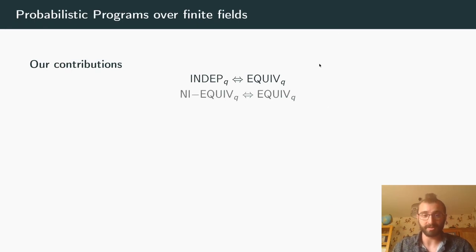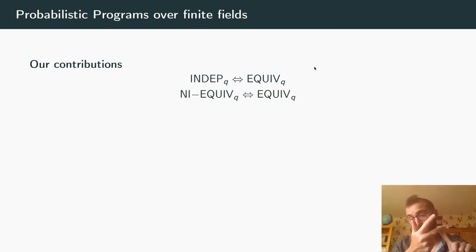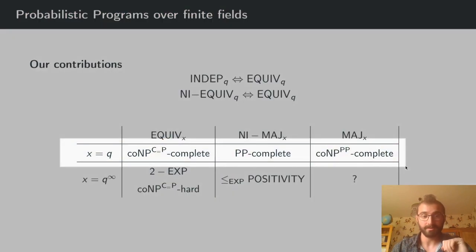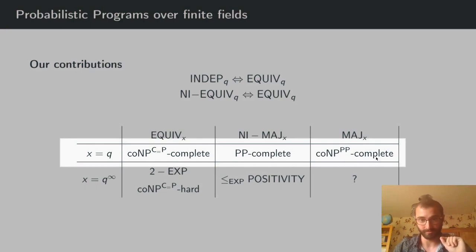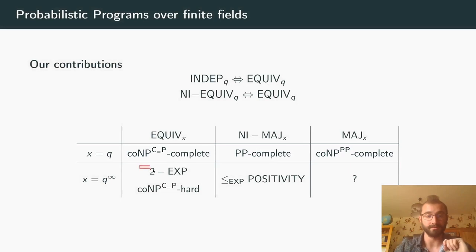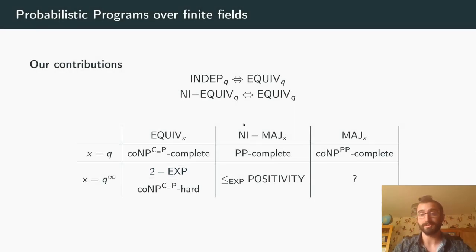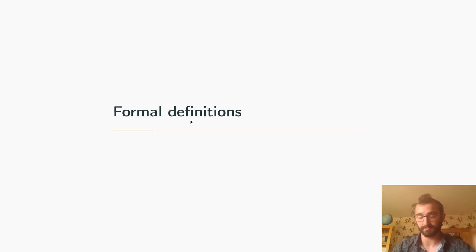In our paper, we start by showing some first reductions between the problems. Independence, equivalence, and equivalence with fixed inputs are all three inter-reducible in polynomial time, so they are essentially the same. We then look at the complexity in the finite case. Our second and probably more important contribution is that in the universal case, equivalence is decidable.